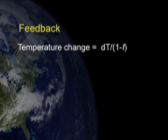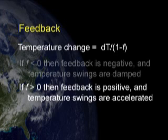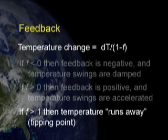This is the basic feedback formula, showing how feedback F can increase or decrease an initial temperature change dT. This formula implies three outcomes. If feedback F is negative, then an initial temperature increase is damped out and reduced. If it is a positive fraction, then the temperature increase is accelerated. If the feedback fraction is greater than 1, then the temperature runs away — the tipping point effect that people sometimes refer to.